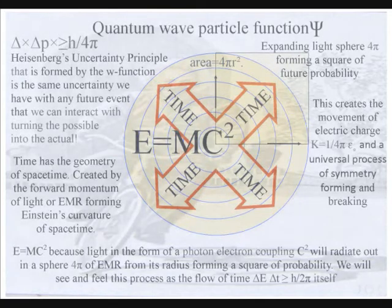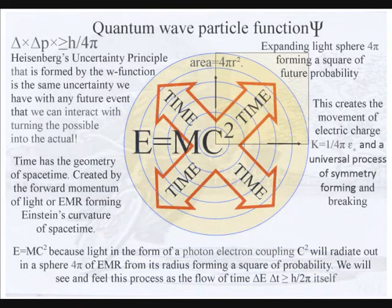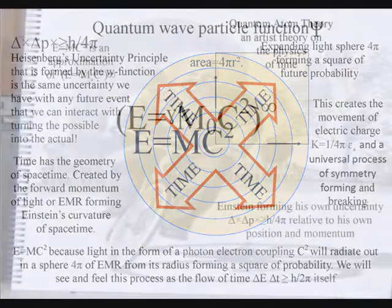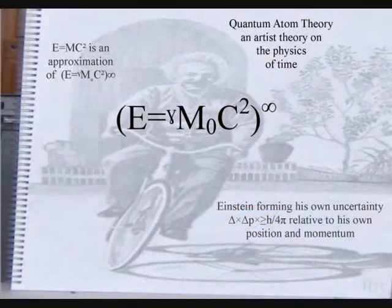The C² in the equation represents light radiating out in all directions at a constant speed, forming a sphere of electromagnetic radiation from its radius, forming a square of probability. This is the same probability we have with any future event, because the process forms the flow of time itself, photon by photon.